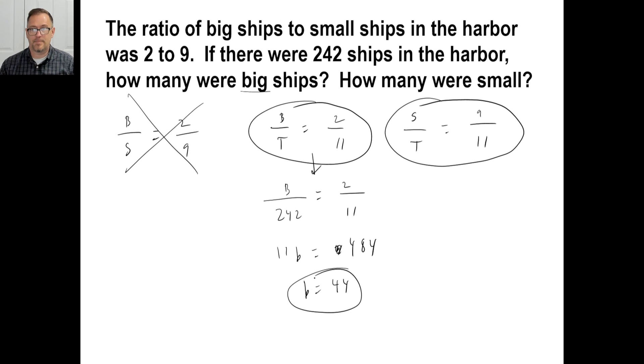How many were small? Well, you could either take 242 and subtract 44 or you could just go ahead and do this other one as well. So, small to total, that's 242 equals 9 to 11. So, 11 times S equals 9 times 242. Oh, why did I volunteer to do this? That's going to be small equals 198. Boom. There you go. Okay. All right. That's it for today.